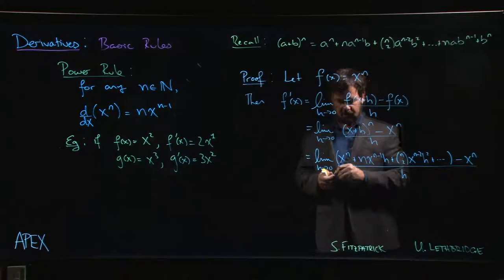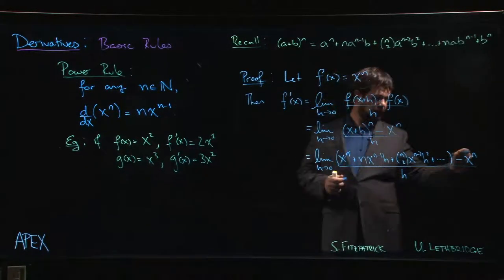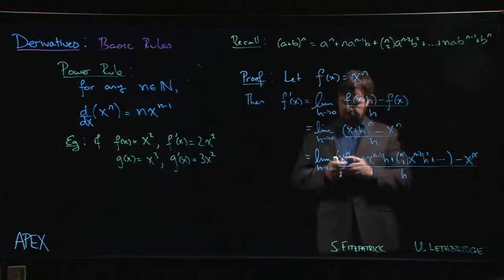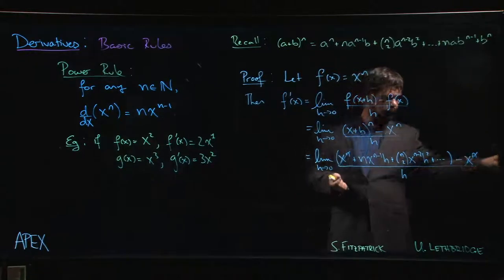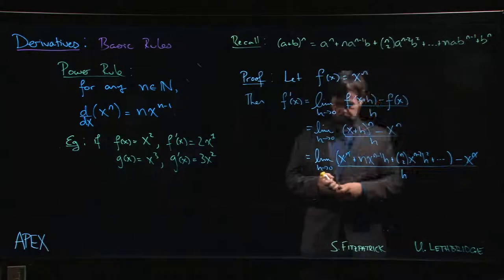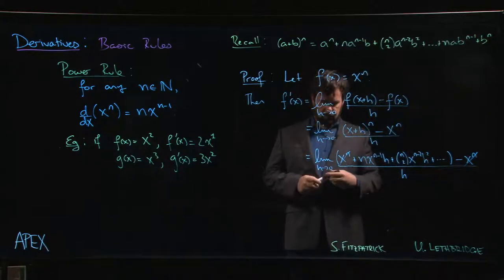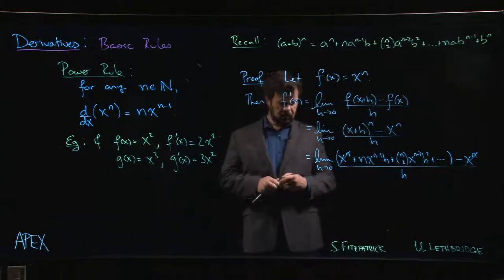x to the n minus x to the n cancels. We always expect that anything not involving h in the numerator cancels out. And we're left with, we divide by h.